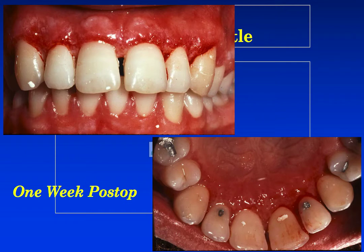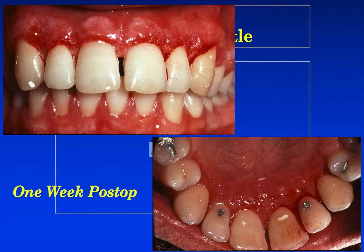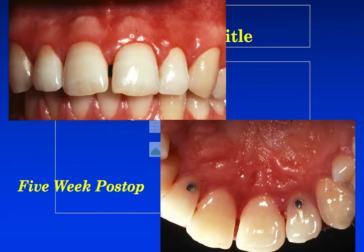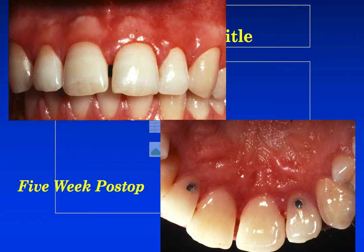New epithelial cells arise from the basal and deeper spinous layers of the epithelial wound edge and migrate over a wound of fibrin that is later resorbed and replaced by the connective tissue bed. At about 5 to 14 days, surface epithelialization is generally complete, and complete epithelial repair generally takes about 4 weeks. Our 5-week post-op shows the tissue contours created by this external bevel gingivectomy — the interdental papilla that were formerly bulbous and thick have been reduced to a more physiologic architecture.